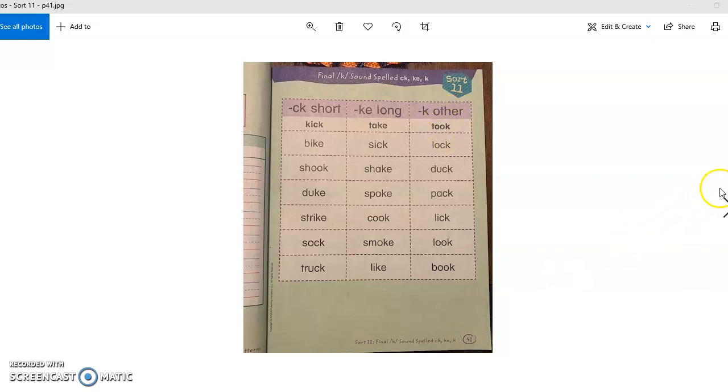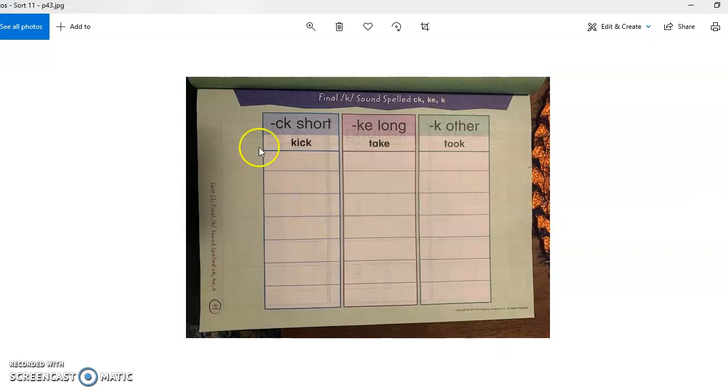So you're going to be on page 41, sort 11. You'll cut and paste onto the three pattern lists here, and from there, the idea is that you begin to memorize the ending spellings of these words that you're sorting.